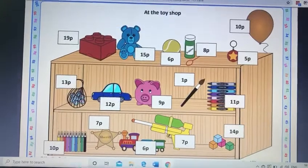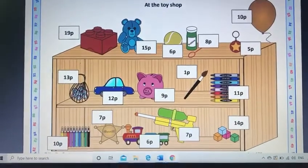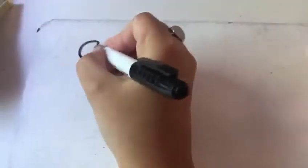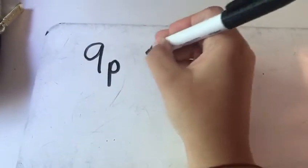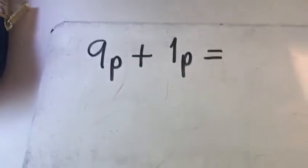So have a think. What would be my number sentence for that calculation? It would be 9p plus 1p and then my answer.